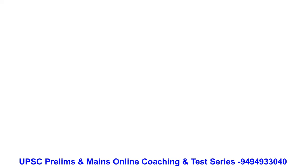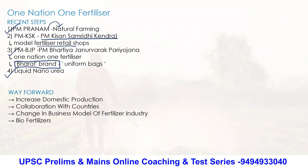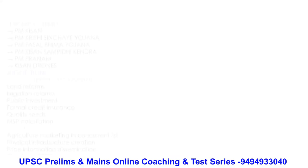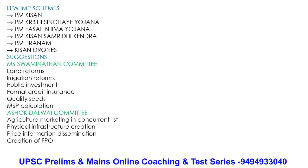Apart from that, these are some way forwards we can discuss when talking about agriculture. Increasing domestic production is one way forward. Collaboration with countries which are advanced in agriculture, and change in the business model of fertilizer industries using bio-fertilizers — these are the way forwards when a question is asked about One Nation, One Fertilizer. For general suggestions, you can talk about the MS Swaminathan Committee and also the Ashok Dhalwai Committee, which are standard committees for agriculture.